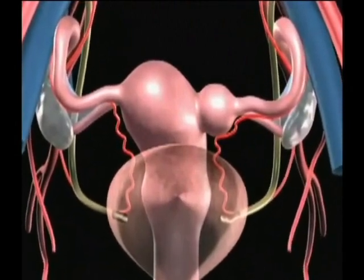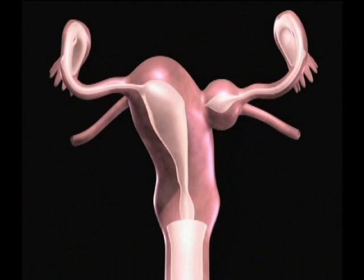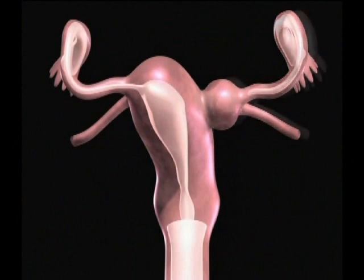When a rudimentary horn is present, it may or may not communicate with the unicornuate uterus, and it may or may not contain functioning endometrium. Furthermore, the attachment of the rudimentary horn to the unicornuate uterus can vary between direct myometrial attachment and fibrous band attachment.